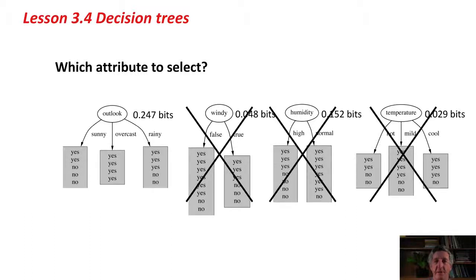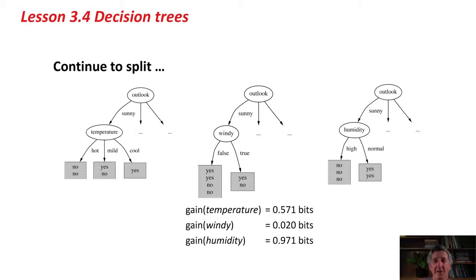At the top level of this tree, the root node, we're going to split on outlook. Having decided to split on outlook, we need to look at each of the three branches that emanate from outlook, corresponding to three possible values of outlook, and consider what to do at each of those branches.